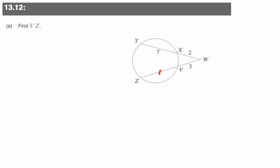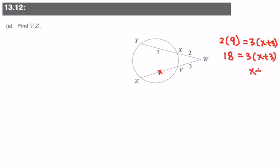Next question: they want us to find VZ, and we call this one X. In this case, outer times whole means 2 times 9 — because 7 plus 2 becomes 9 — must be equal to 3 times (X plus 3). On the left side we get 18, then dividing by 3 on both sides, X plus 3 equals 6, hence X equals 3, and that is the value of VZ.